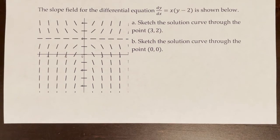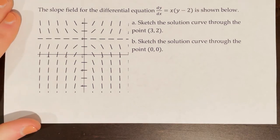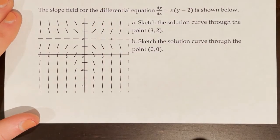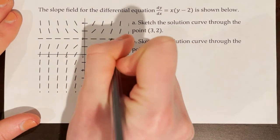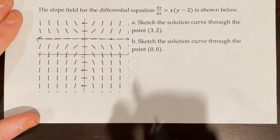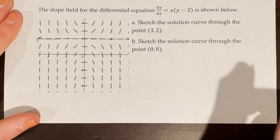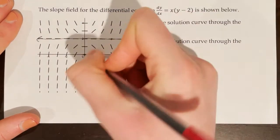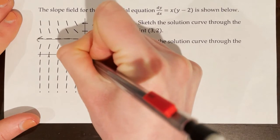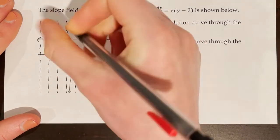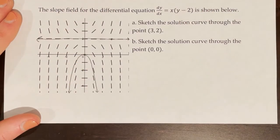The slope field for dy/dx = x(y - 2) is shown. For part A, sketch the solution curve through (3, 2). The tangent lines at y = 2 are all horizontal, so the solution curve is just a horizontal line. For part B, sketch the solution curve through (0, 0). At (0, 0) the slope is 0, but it starts curving downward. We follow the tangent lines, keeping our curve parallel to them.